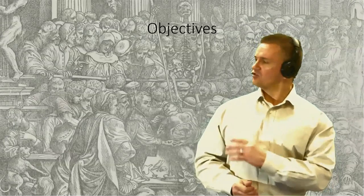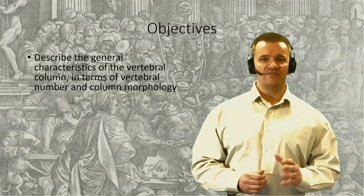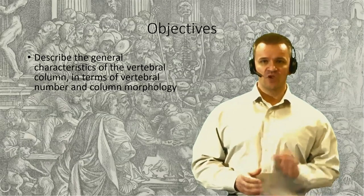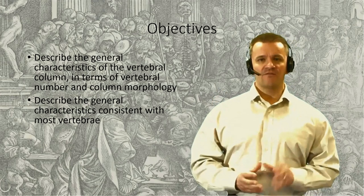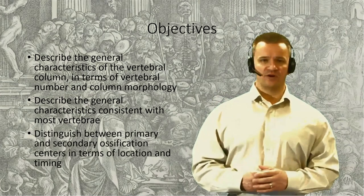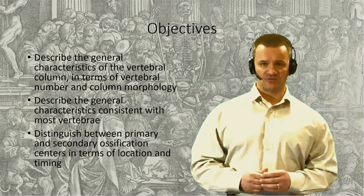We'll look at the general characteristics of the vertebral column in the first session. We'll then spend the second session looking at the characteristics of different types of vertebrae. In the third session, we'll look at the joints and movements permitted by the vertebral column. We'll finish by looking at a variety of different injuries in the fourth session. In this first session, we'll begin with a general description of the vertebral column, looking at vertebrae number and general shape, then describe the morphological features of a typical vertebra, and finally look at the growth of vertebrae from cartilage to bone — a process known as ossification.